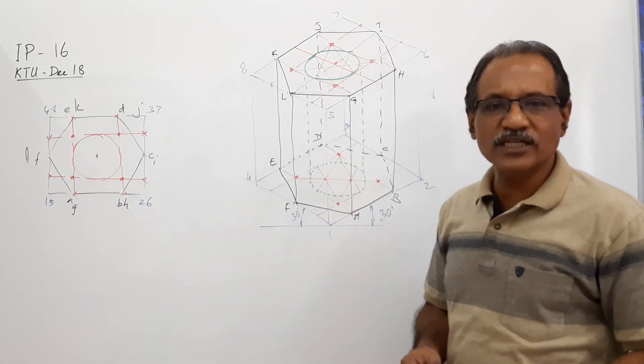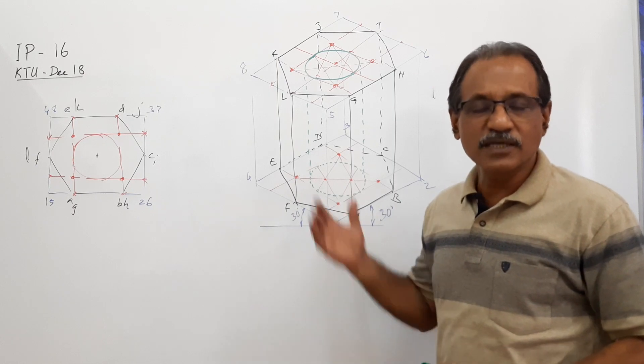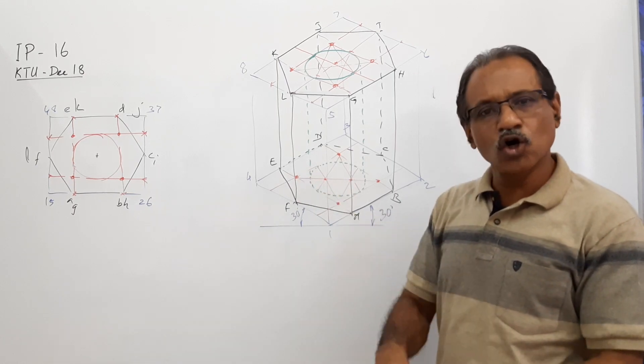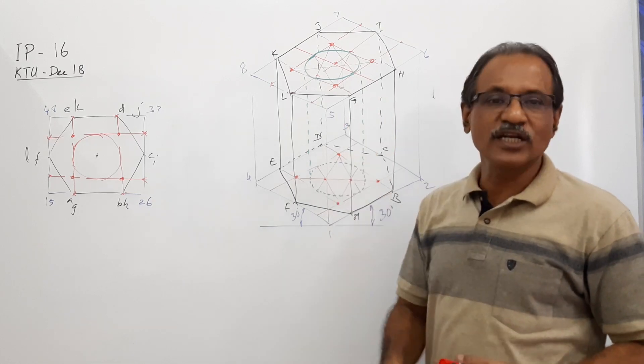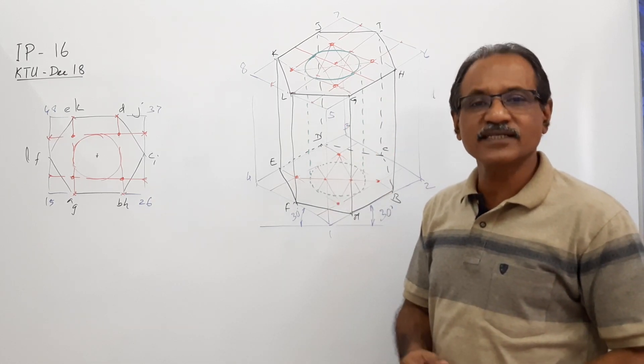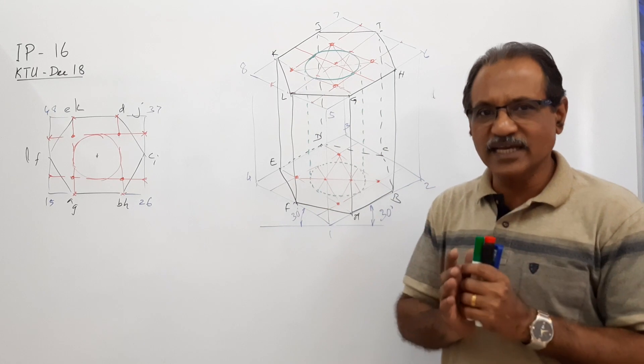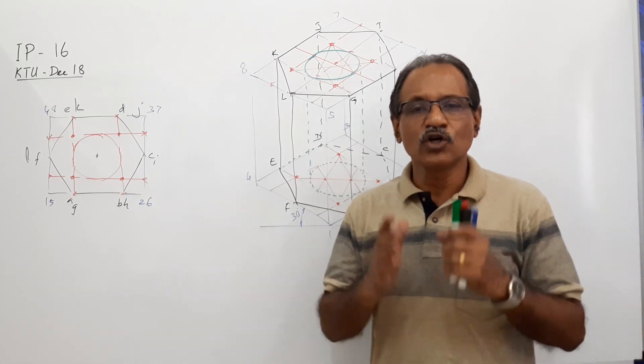I hope you understand. Similarly, you can have a hole in a pentagonal prism or a square prism or in a cylinder, coaxial hole in a cylinder, etc. So this problem gives you basic information how to draw such questions.